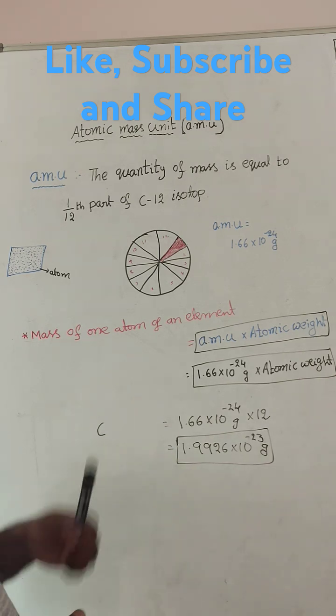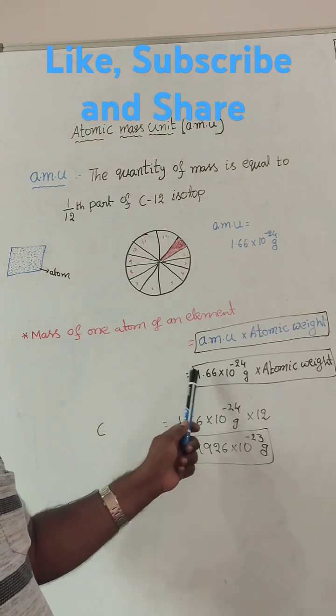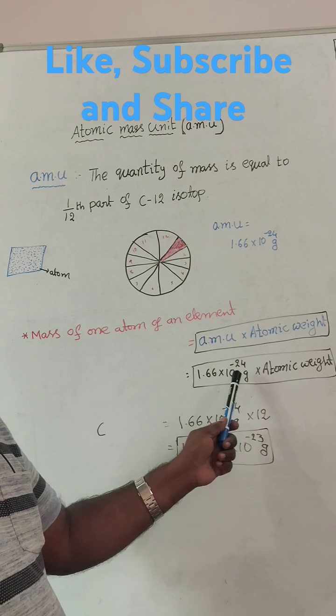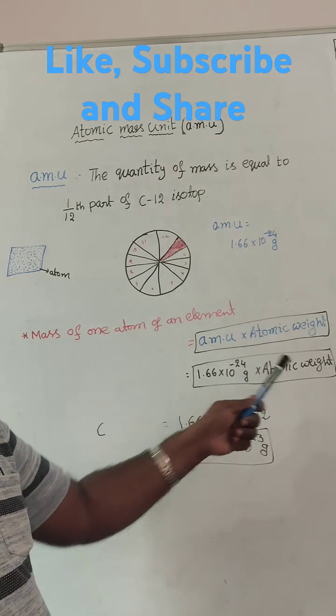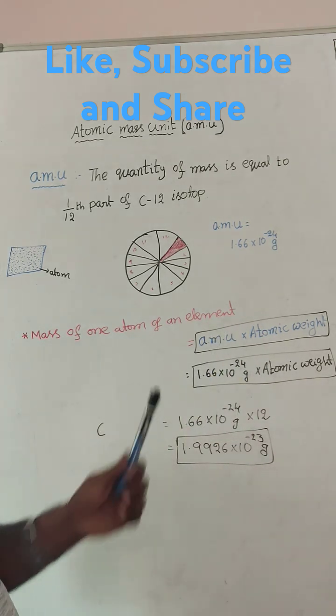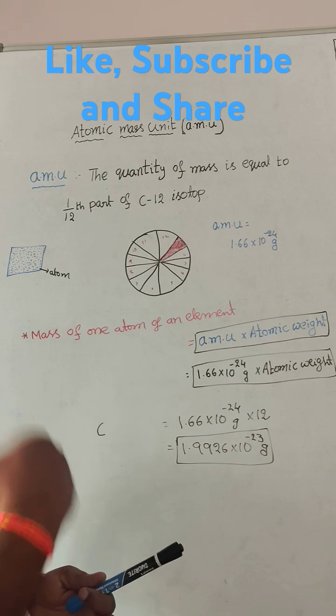You want calculate for nitrogen at the time, 1.66 into the power of minus 24 grams into atomic weight of nitrogen is 14. If you multiply, you will get that value.